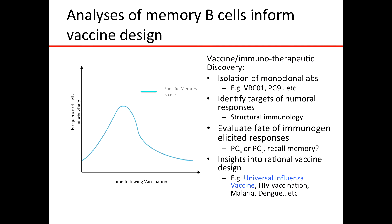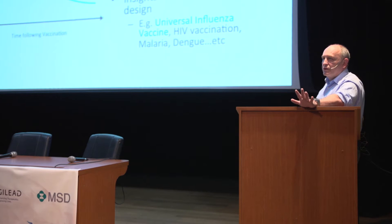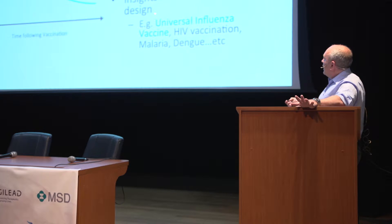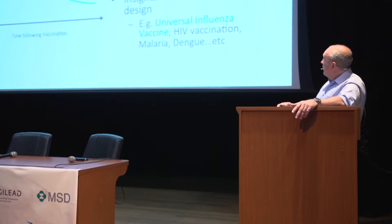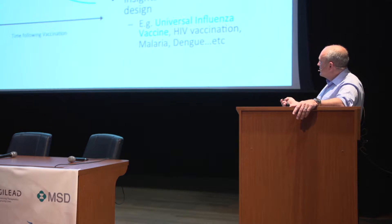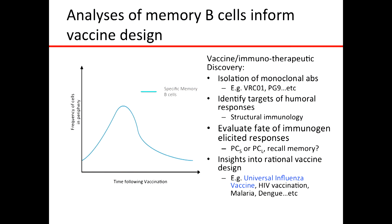Memory B cells have been used to isolate probe-positive cells via VRC01 or PG9, as we've heard about today. We can look at structural biology, evaluate plasma cells using probes as well, and by doing all of this we get insights into the rational design of vaccines — primarily an HIV vaccine, but today I'll talk more about a universal influenza vaccine.